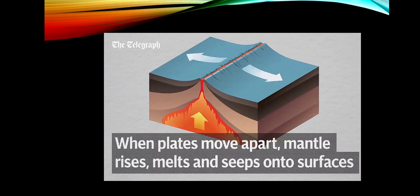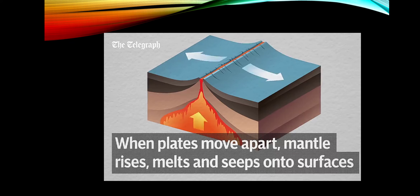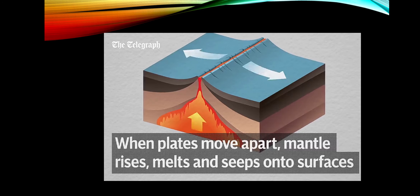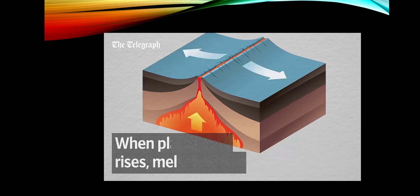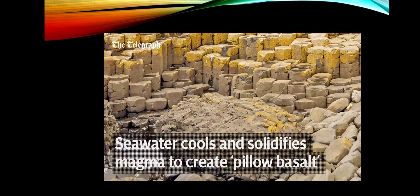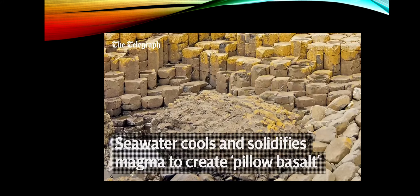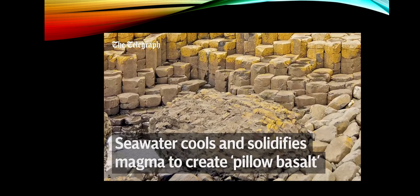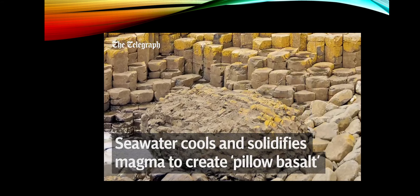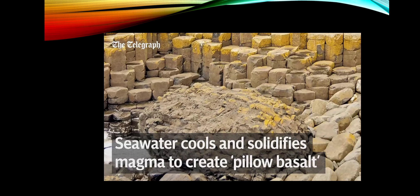At mid-ocean ridges, tectonic plates move apart. This creates space for the mantle rock below to rise. As it moves upwards, the pressure on the rock decreases, allowing it to melt. When the magma reaches the surface, the ocean water causes it to cool, creating giant pillow-like formations of a rock called basalt. These rocks make up most of the sea floor.